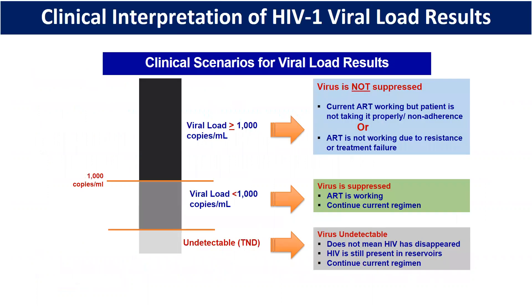How do you clinically interpret HIV-1 viral load reports? Whenever we do viral load testing, the report can be in three categories. One — the best outcome — viral load is TND, target not detected. This means HIV has not disappeared; it is still in the reservoir and we must continue the drug. The other two instances are: viral load less than 1000, which means virus is suppressed and the antiretroviral regimen is working. If it is more than or equal to 1000, then we have to think something is not right — either the patient is not taking the drug, or the drug is not working.